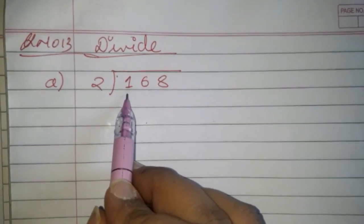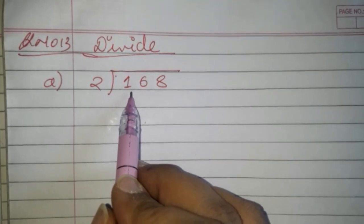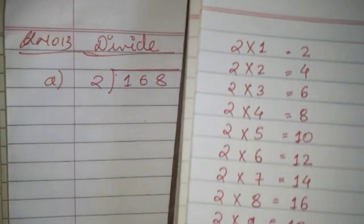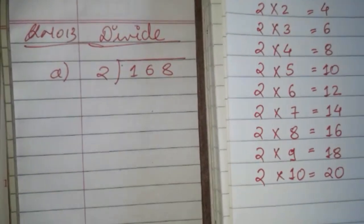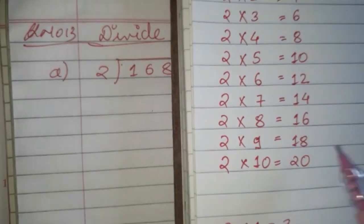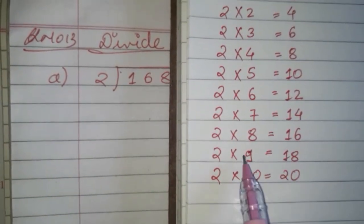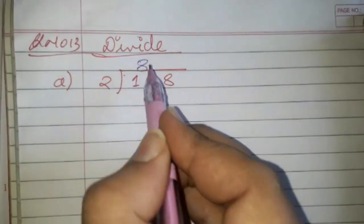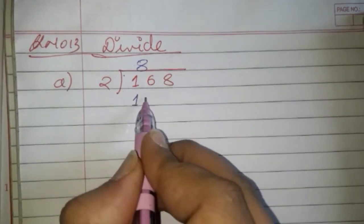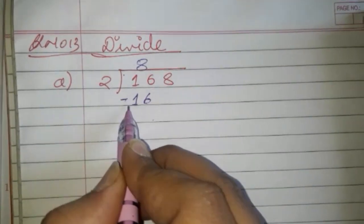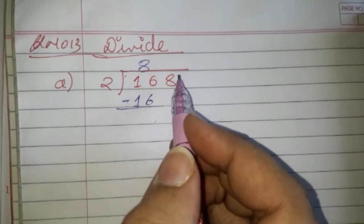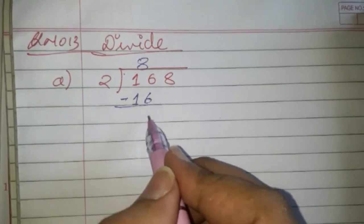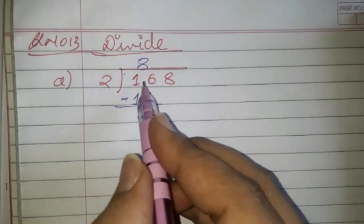We'll divide 16 first. We follow the same procedure — just check if 16 is in the table of 2. Yes, 16 is there, which comes 8 times. So 2 eights are 16; we write 8 and subtract. 6 minus 6 is 0, and 1 minus 1 is 0.